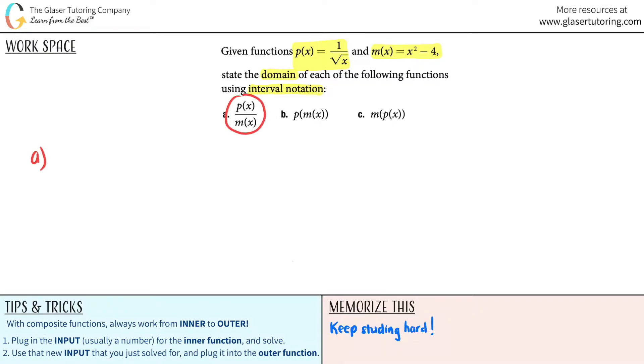It looks like we are just dividing two functions. I'm taking the p of x function, which was stated up here, and I'm dividing it by the m of x function, which was this. So simple enough, I'm just going to rewrite it, p of x over m of x. What was the p of x function? Well, the p of x function was 1 over the square root of x, which is what was this, and all I got to do is just divide that by the m of x function.